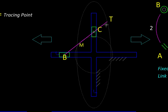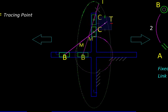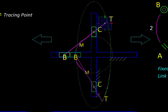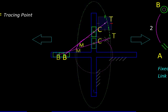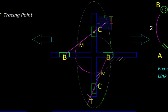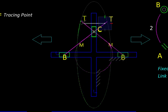Let us see their path as we move this mechanism. You will notice T is tracing a perfect ellipse while M is tracing a circle. We will see in a short while how they do it but because we are getting an ellipse this mechanism is called an elliptical trammel.